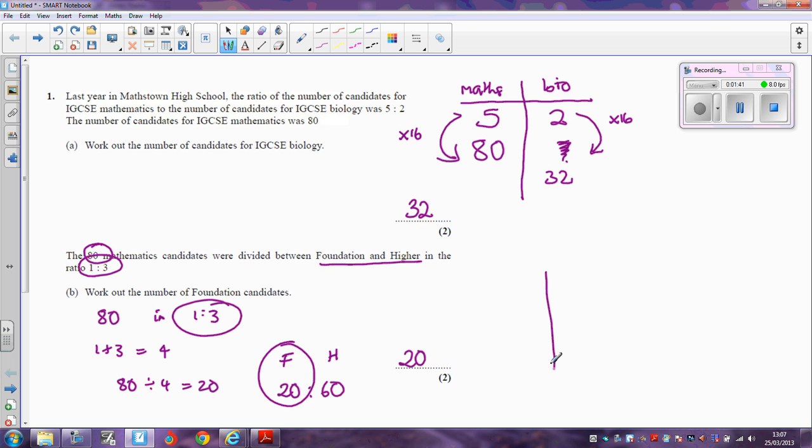You could have done it in table form like this. It says foundation to higher is 1 to 3. You are told that altogether, the total is going to be 80. So you are looking for two numbers that are in the ratio 1 to 3 that add up to 80. If we add 1 and 3, we get 4. What do we do to 4 to get 80? We multiply by 20.